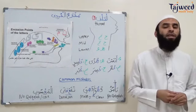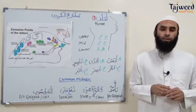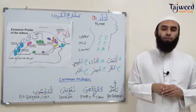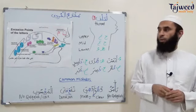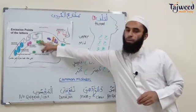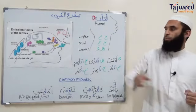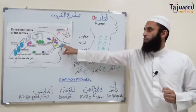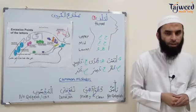We found out that there are five different areas — twenty letters they can be pronounced from, five different areas. We started the first three areas: we looked at al-jauf, the empty part of the throat and the mouth. Then in the last lesson we looked at the nasal passage, al-khayshum, and also the shafatan, the lips.